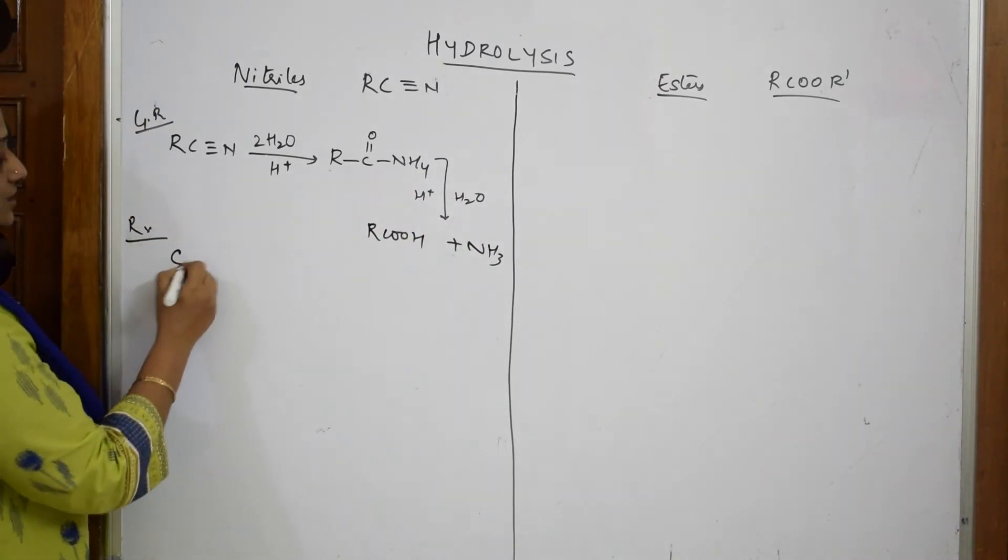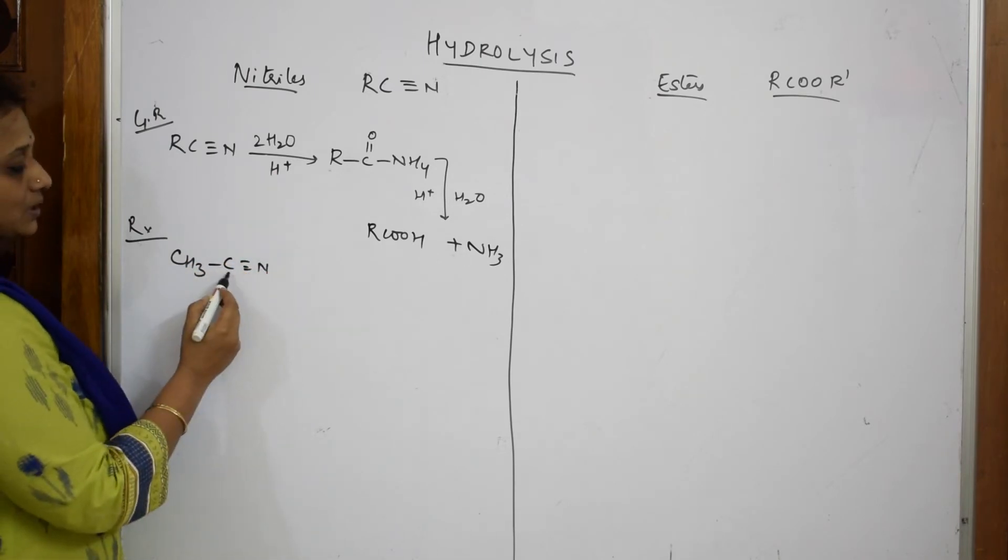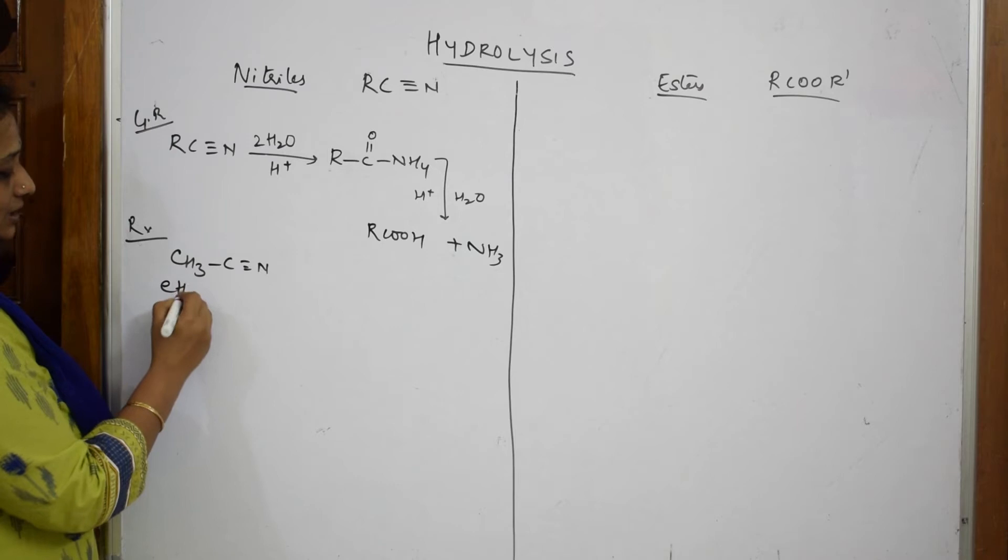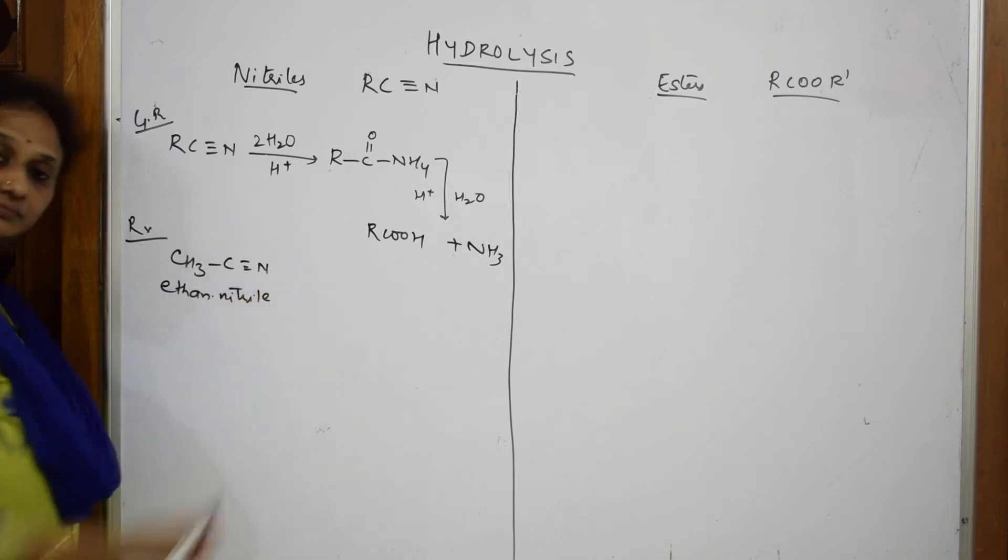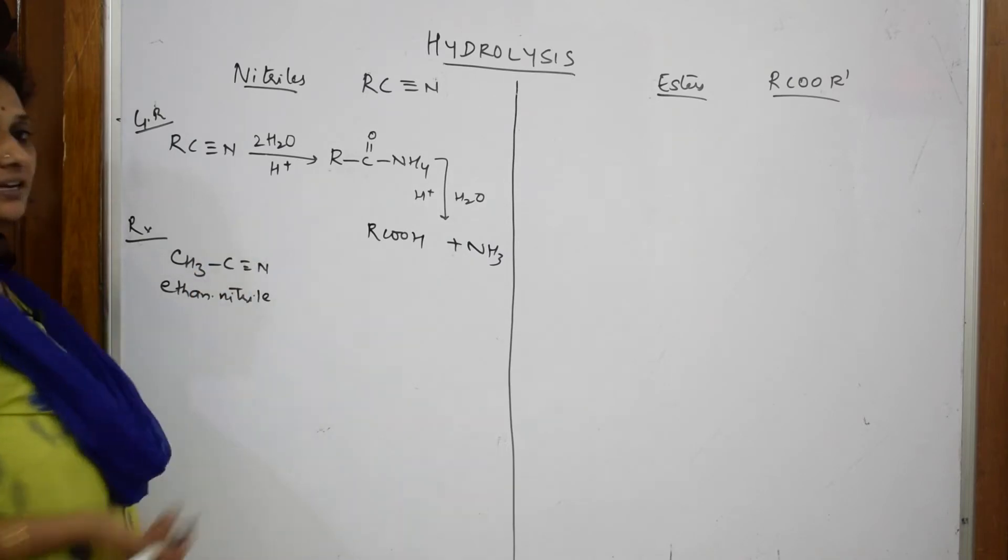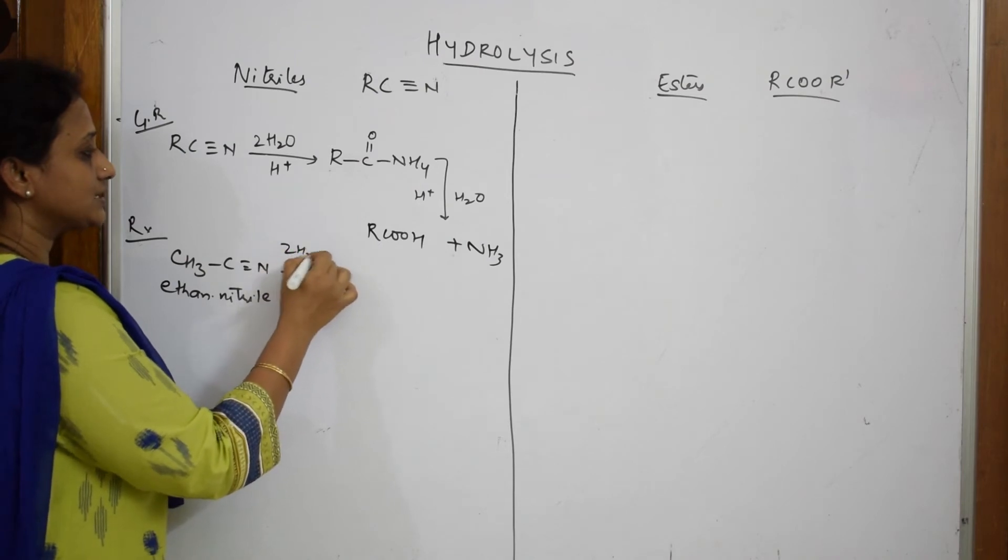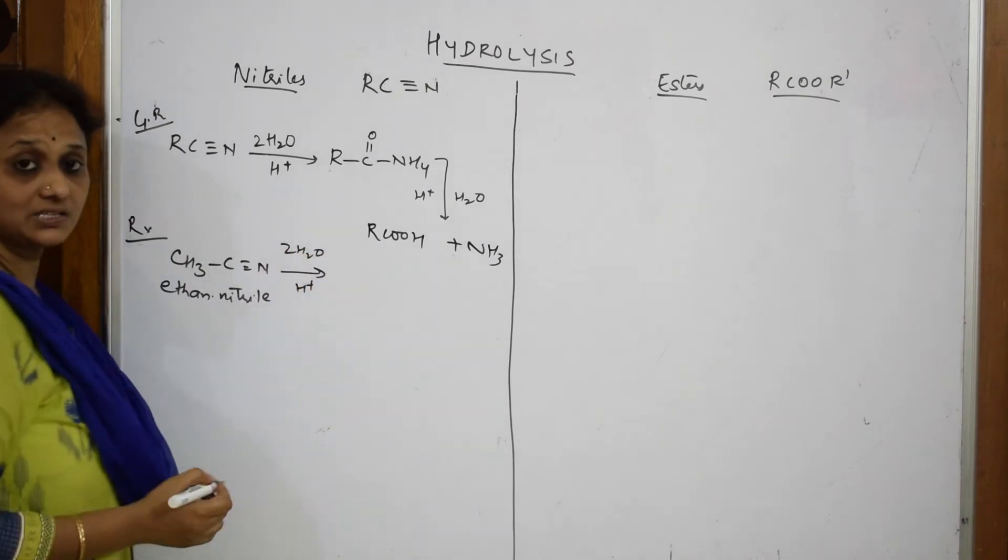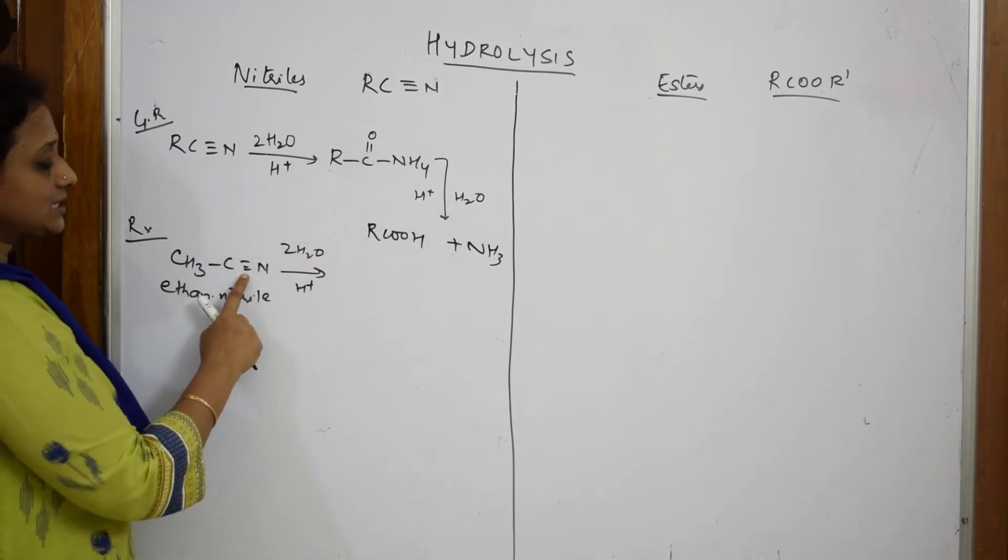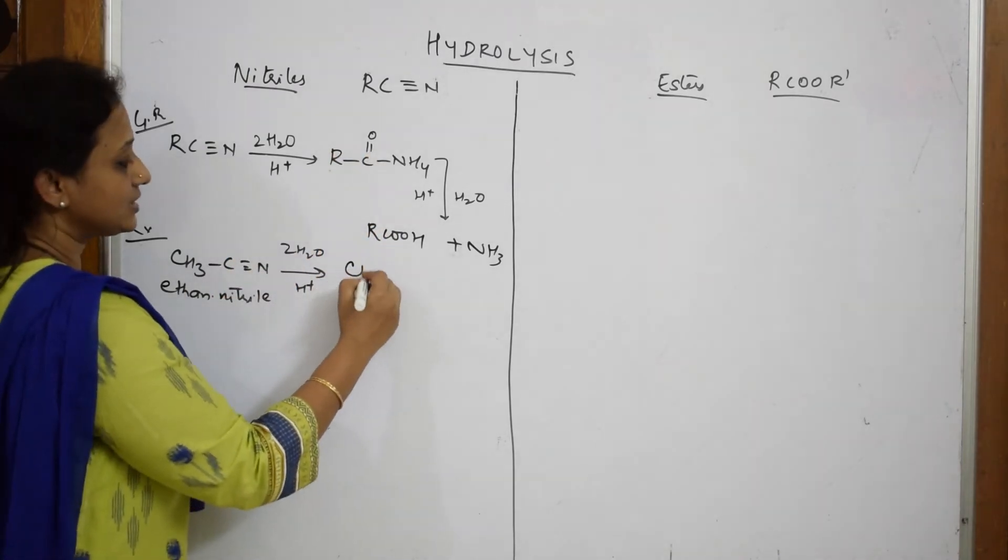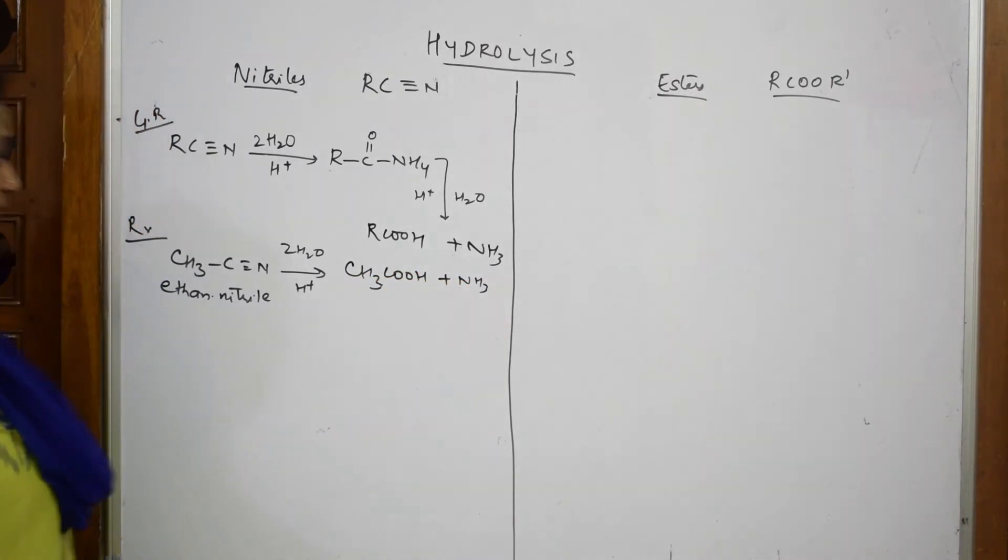Let's see one reaction. If I take CH3-C triple bond N, this compound has two carbons, so it is ethane nitrile or ethanenitrile. When I hydrolyze this in the presence of H+, if you don't want to remember the whole mechanism, just directly write: cyano group converts to carboxylic group plus ammonia.